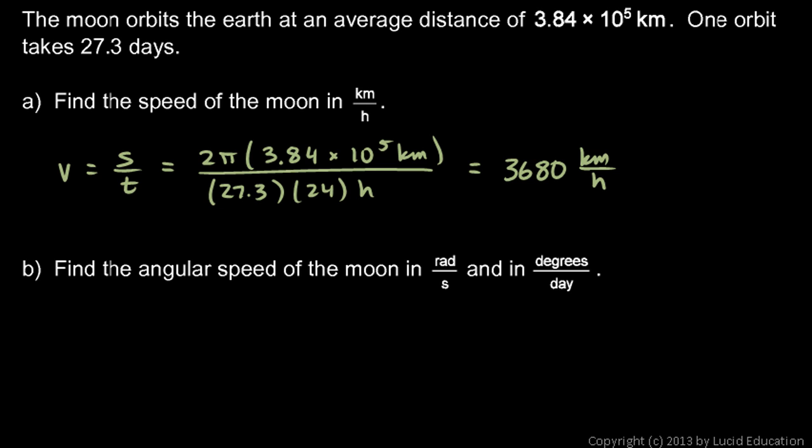Then, we're told to find the angular speed, how much rotation there is in a given amount of time. What we're talking about here is the Earth and the Moon, and as the Moon moves, it sweeps through a certain angle. We want to know how much angle in a given amount of time, the angular speed of the Moon in its orbit around the Earth.